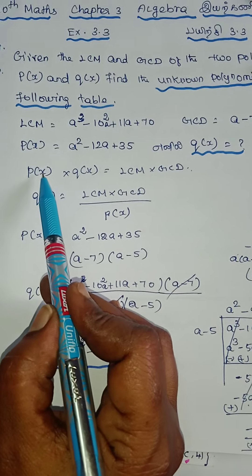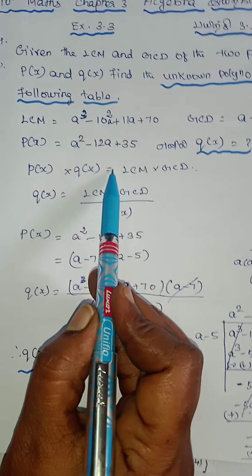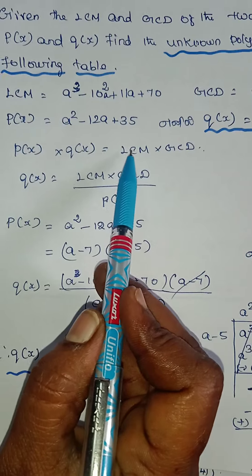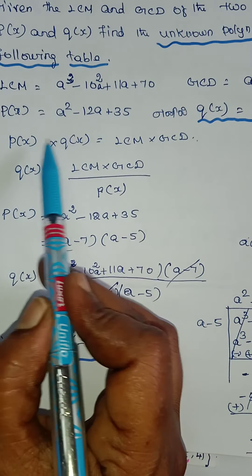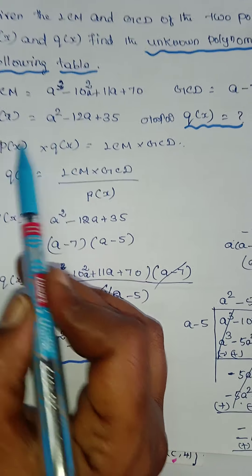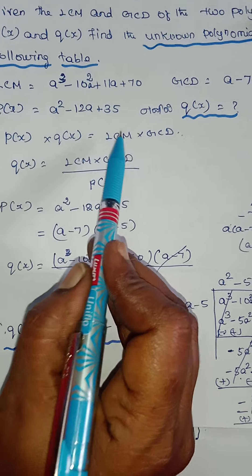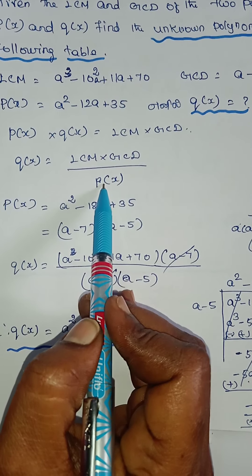Now let's take a look at P of X and Q of X. P of X and Q of X is equal to LCM into GCD. Now LCM and GCD — Q of X is equal to P of X. Now let's take a look at LCM into GCD divided by P of X.